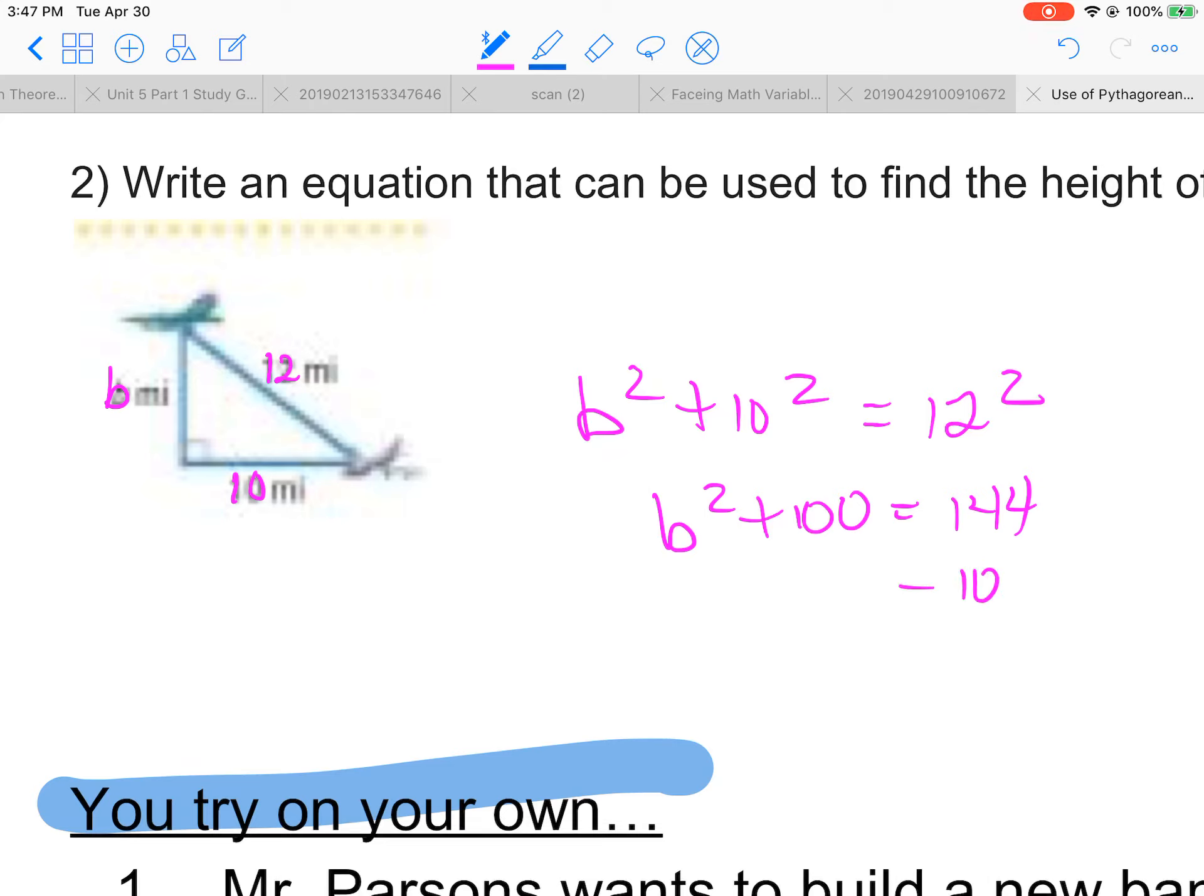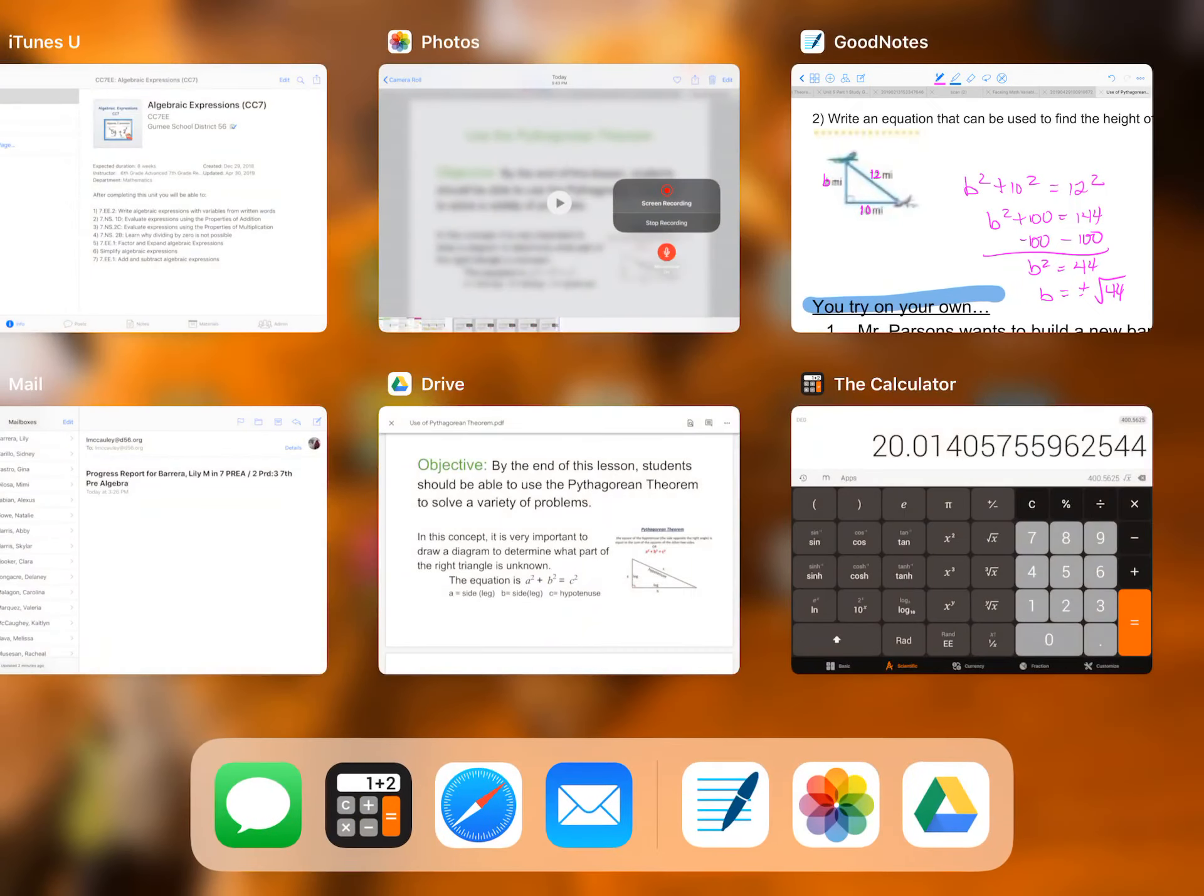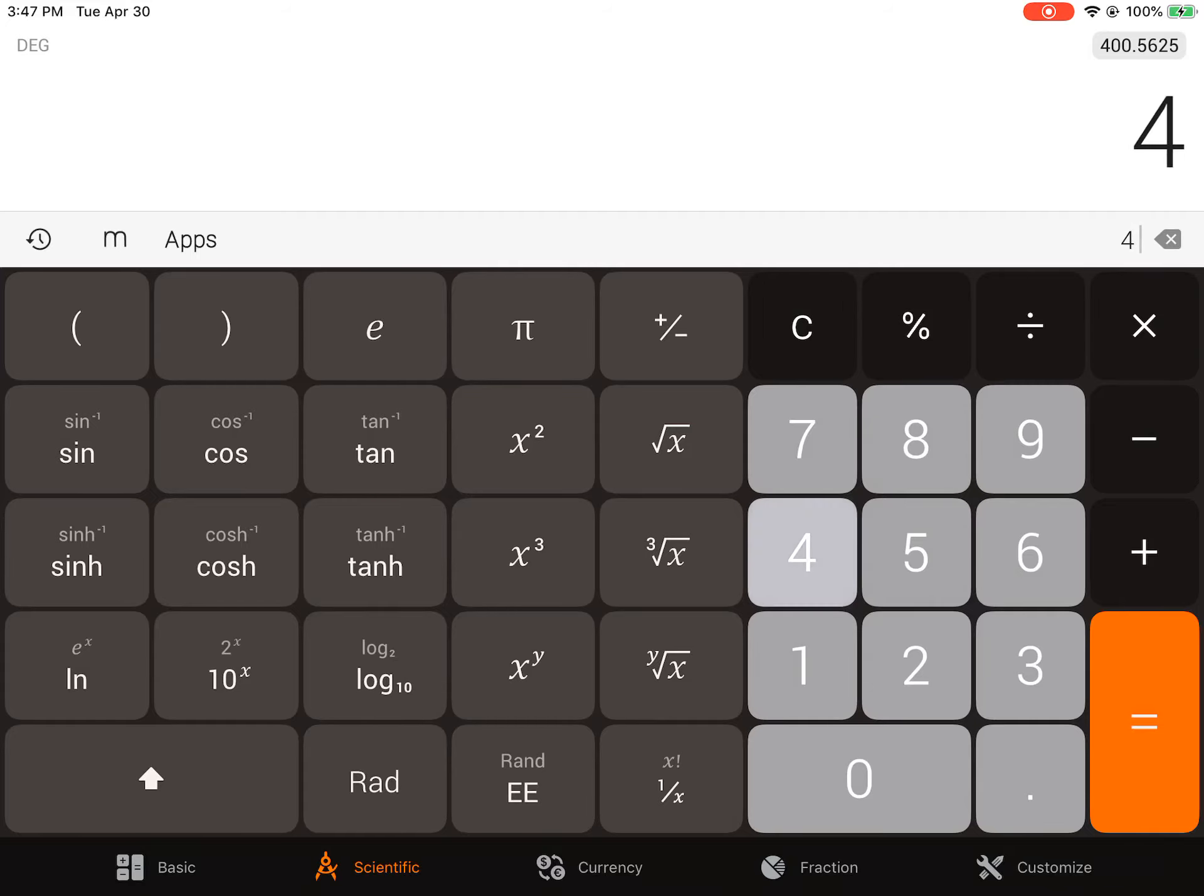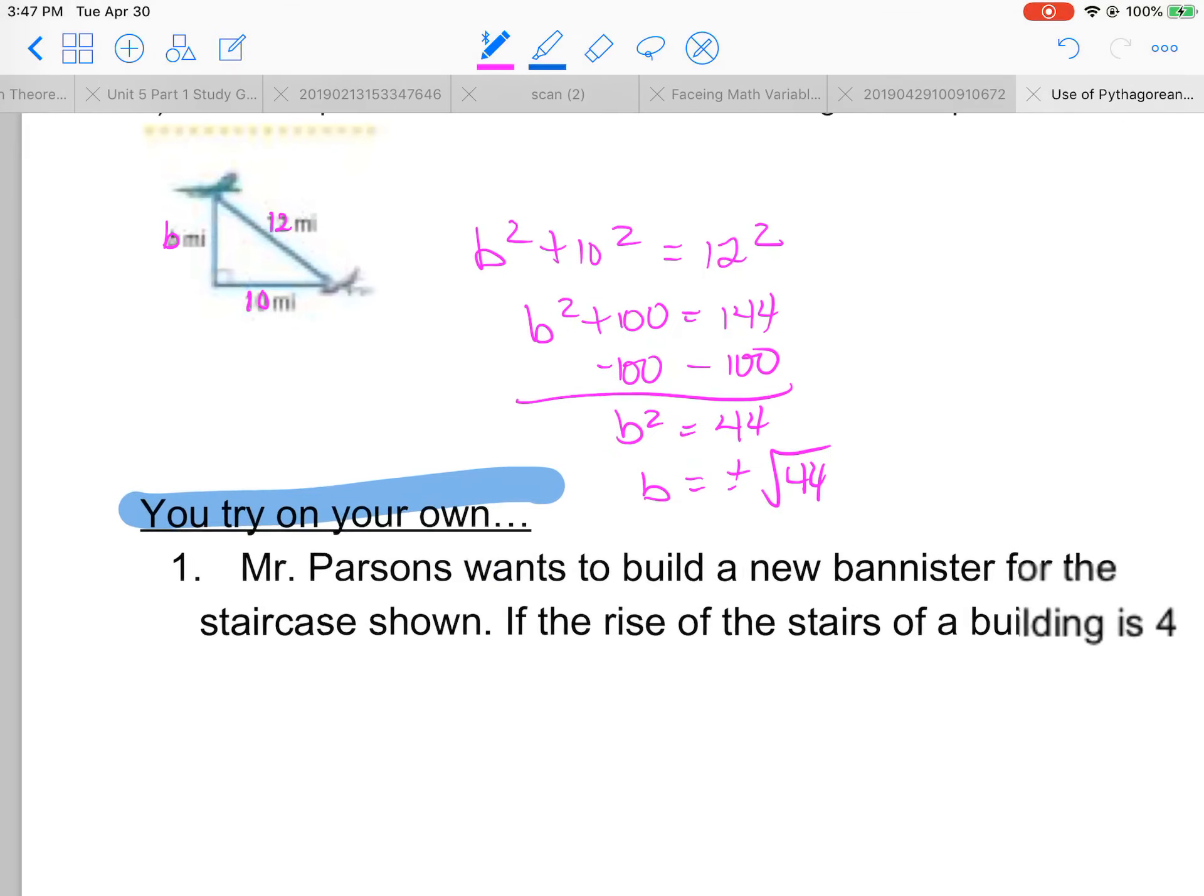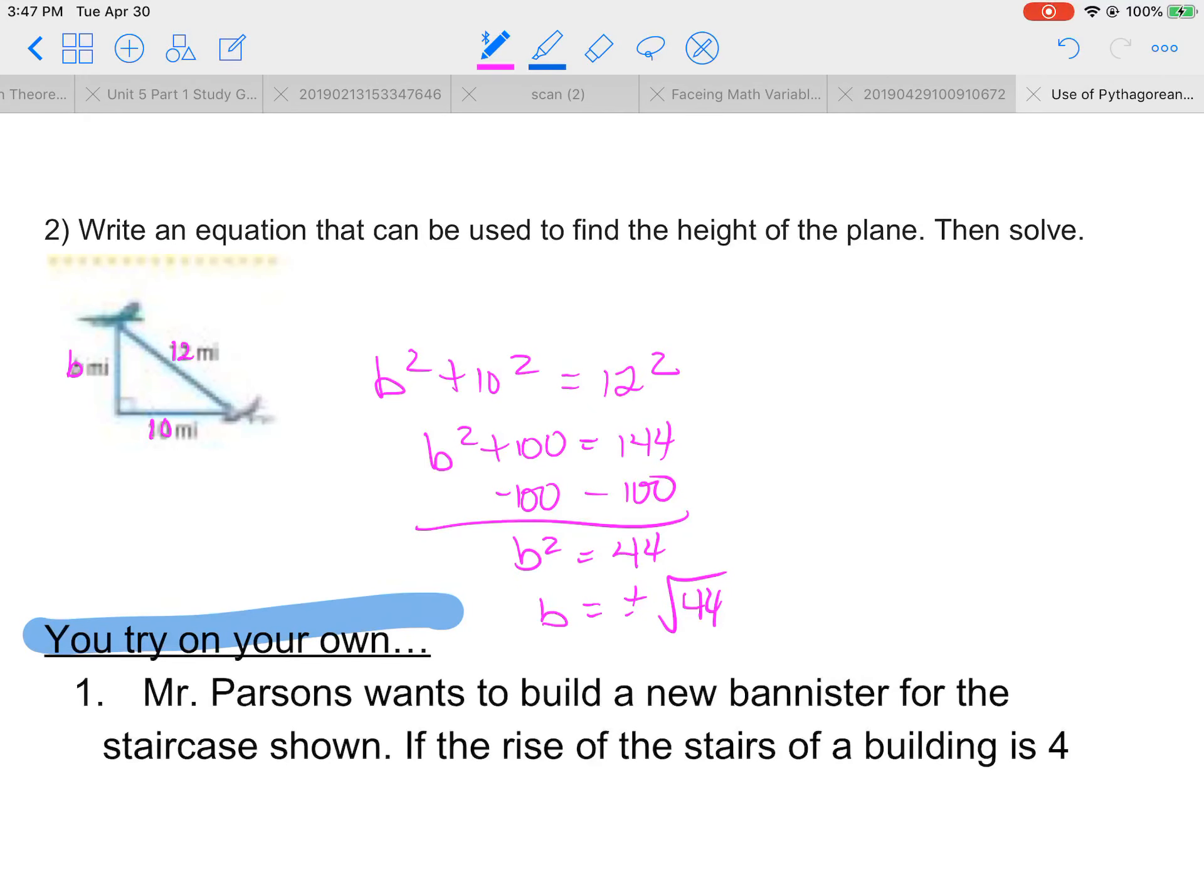Subtract 100 off that side, both sides. B squared equals 44. B equals plus or minus the square root of 44. So our calculator again, 44 square root 6.6. We round to the nearest tenth again.